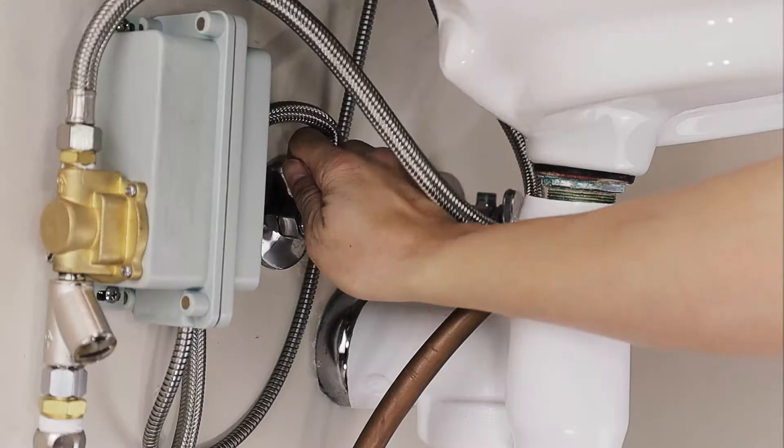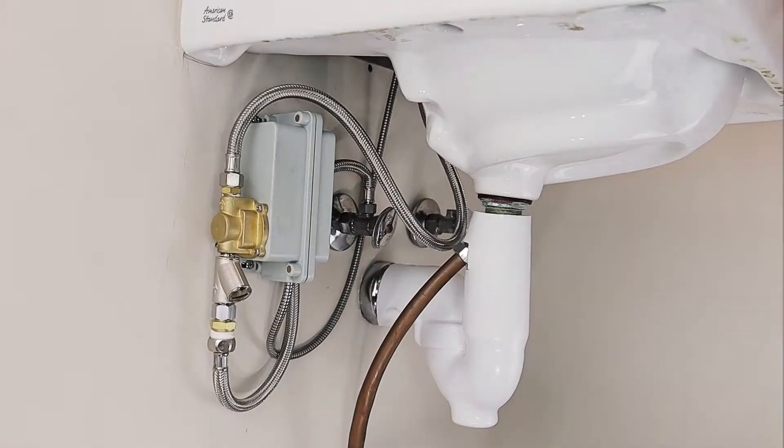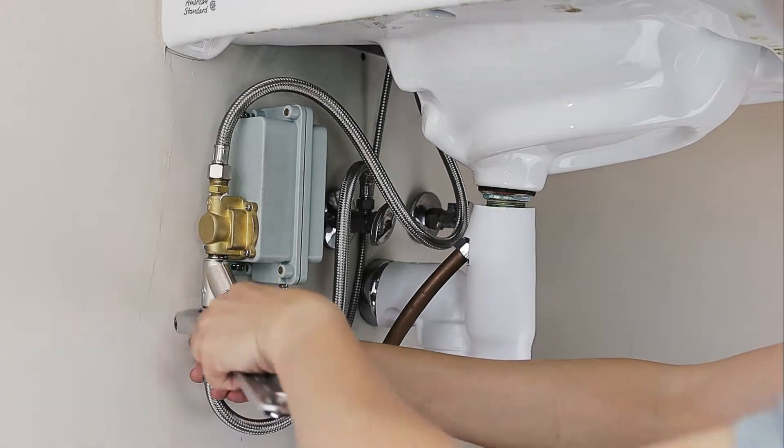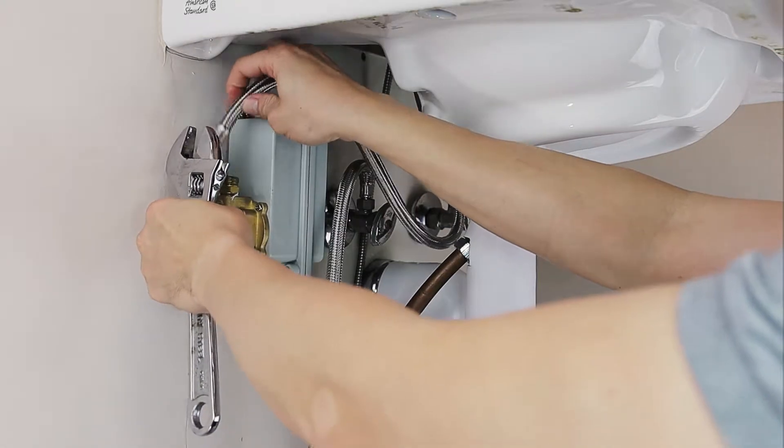First, turn off the water supply at the stop valve. Activate the faucet using the sensor to purge the supply line of residual water pressure. Disconnect the supply lines from the control box and remove it from the wall.